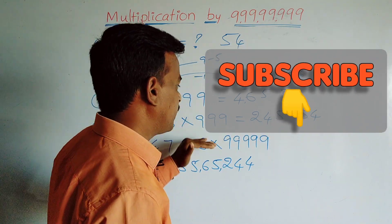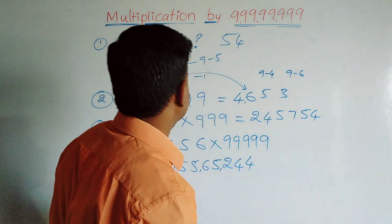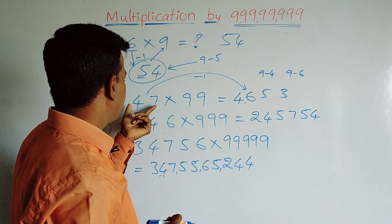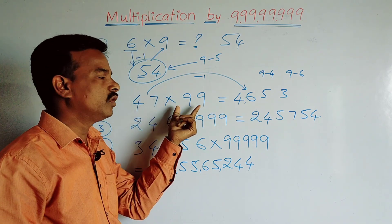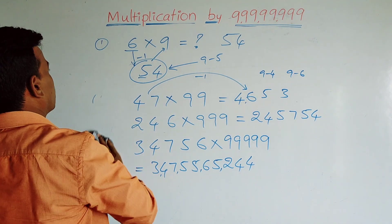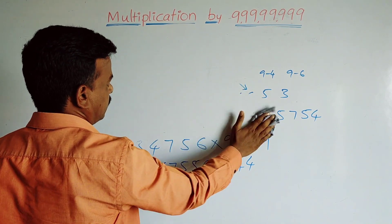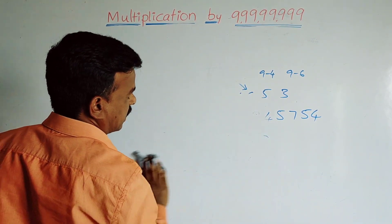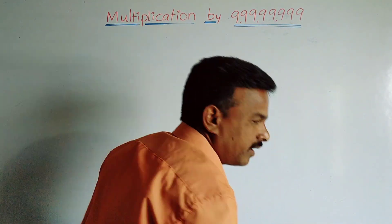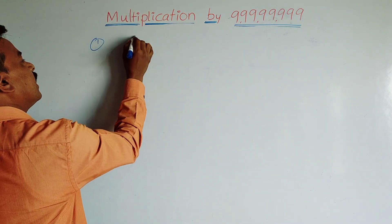This completes the first type of multiplication. The condition for the first trick is: the number of digits in the multiplicand is equal to the number of nines in the multiplier. Now I will explain the second type. In the second type, the condition is: the number of nines in the multiplier is equal to double the number of digits in the multiplicand.